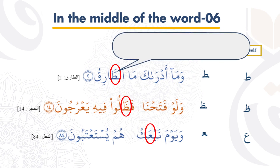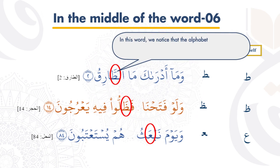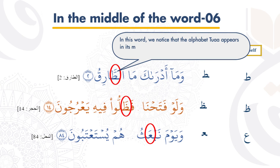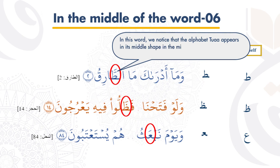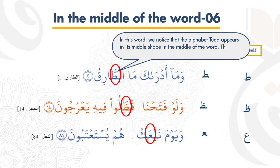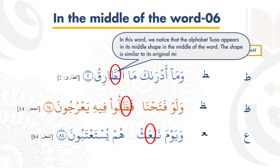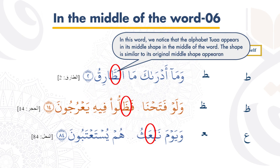In this word, we notice that the alphabet Toa appears in its middle shape in the middle of the word. The shape is similar to its original middle shape appearance.